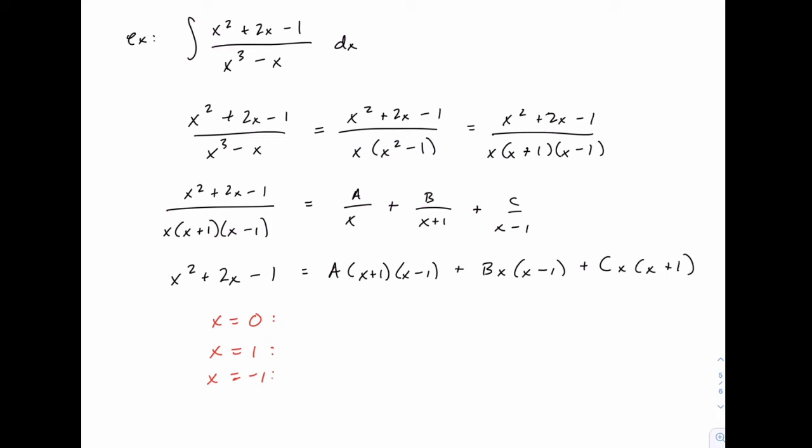When we plug in 0, the left-hand side just leaves us with negative 1, and on the right-hand side, these last two terms are going to drop off because they have an x multiplied in there. The 0 is going to cancel those out. The only one that remains will be A times 1 times negative 1. So we have negative 1 equals negative A, or A equals 1.